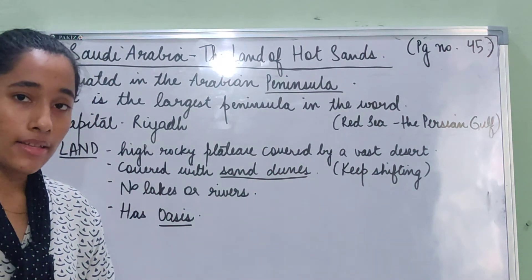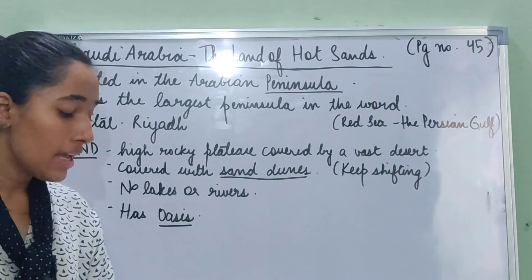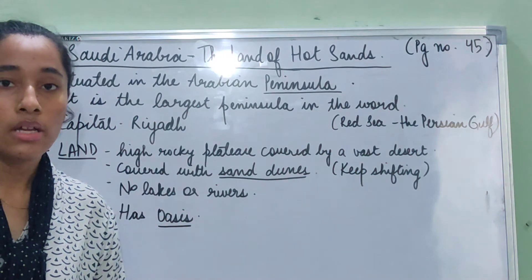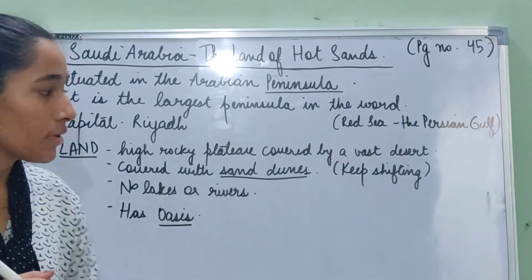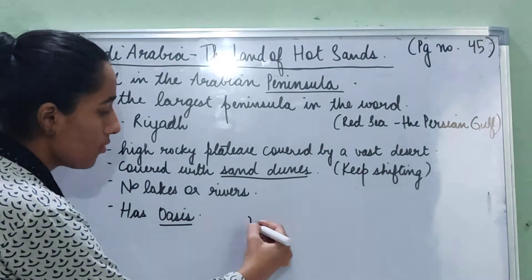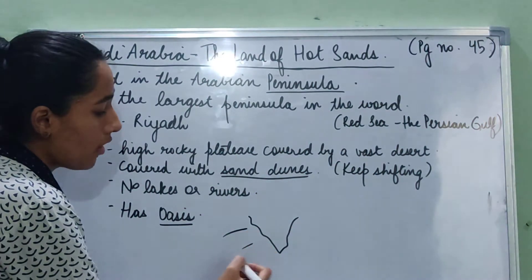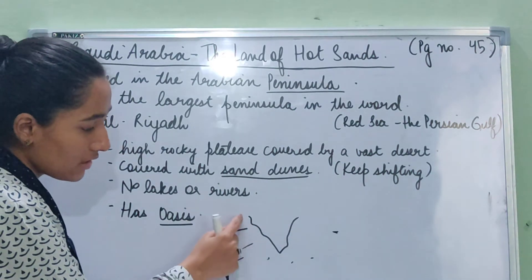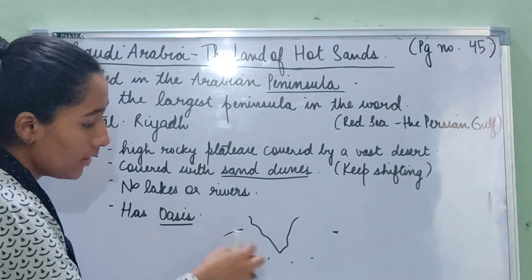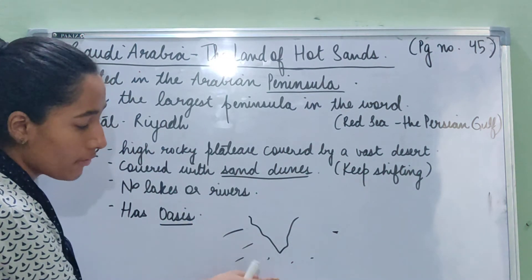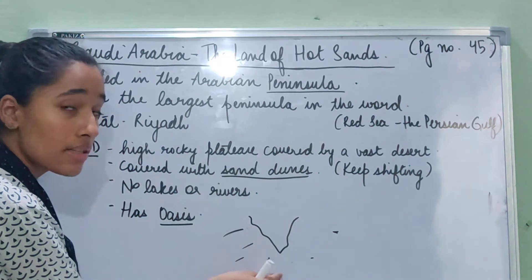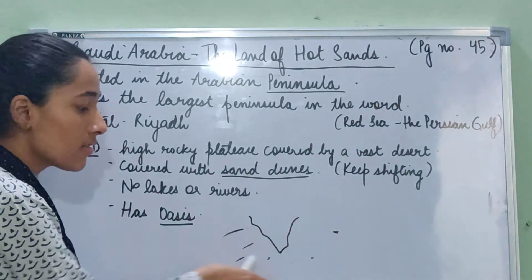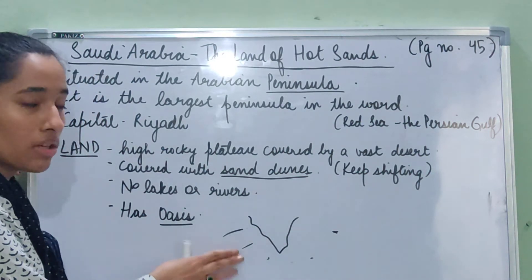A peninsula is a piece of land that is jutting out into the sea and it is surrounded by water on three sides. India is also a peninsula. A peninsula looks something like this — here we have water on the sides, and this piece of land is coming out into the sea, surrounded by water on three sides — one, two, three sides.